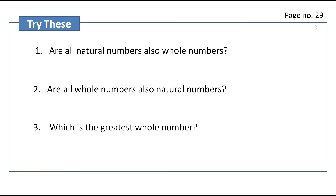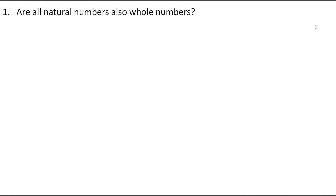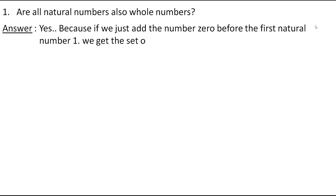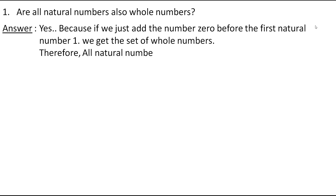Let's solve them one by one. The first question is: are all natural numbers also whole numbers? Answer: yes. Because if we just add the number 0 before the first natural number 1, we get the set of whole numbers. Therefore, all natural numbers are also whole numbers.